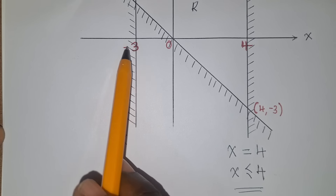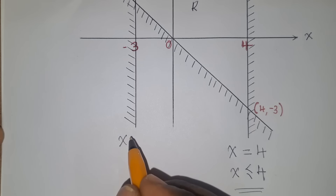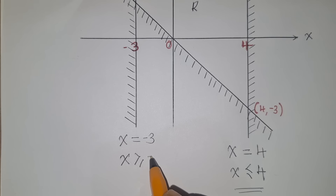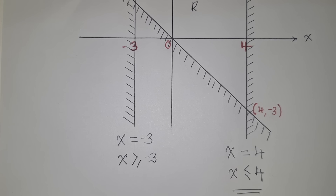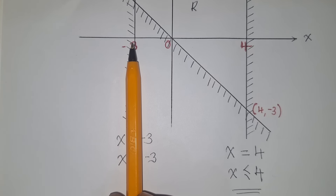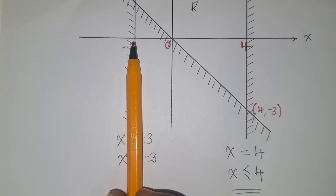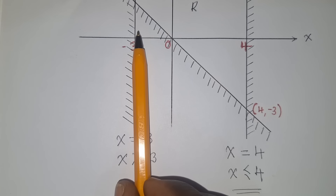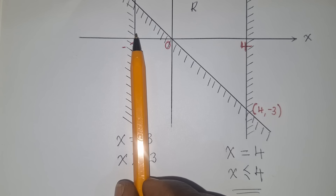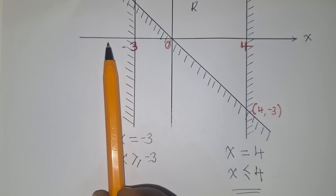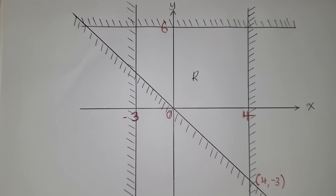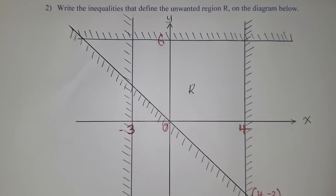For the next line, it crosses the x-axis at −3. The unshaded side is the right-hand side, which is greater, so we write x ≥ −3. Always get what is not shaded — that gives us the correct inequality. We're done with those two lines.